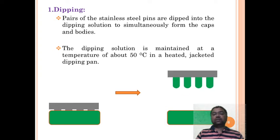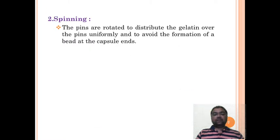The second step is spinning. In spinning, the pins are rotated to distribute the gelatin over the pins uniformly and to avoid formation of beads at the capsule ends.